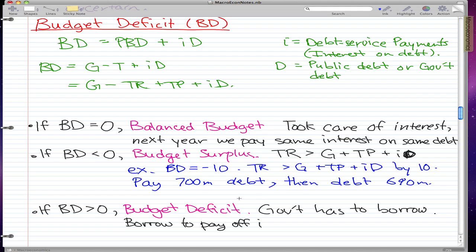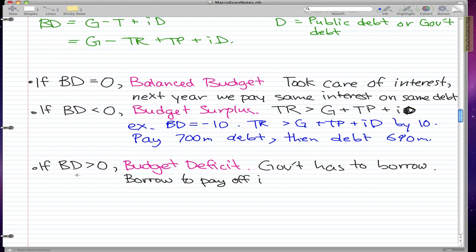Essentially, we took the minus 10 and applied it to the outstanding debt. The debt we pay interest on next year is 690 million. We were able to pay our interest and pay off some of our debt.